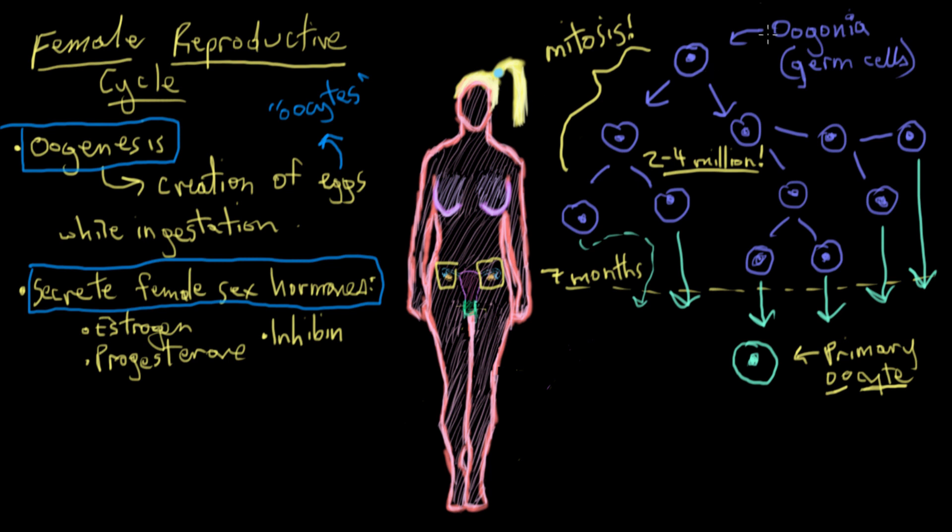And let me also just mention, on a chromosomal level, these oogonia, the germ cells, they're 2N, which means they have two copies of each chromosome, and the primary oocytes are the same, they're also 2N.